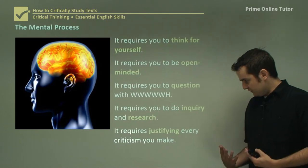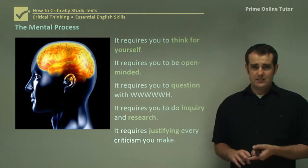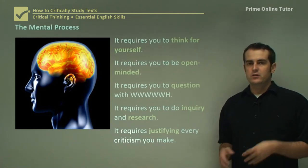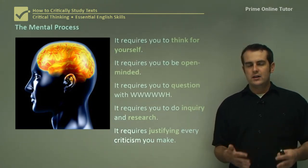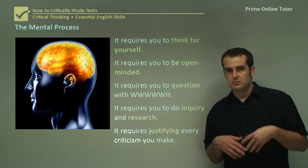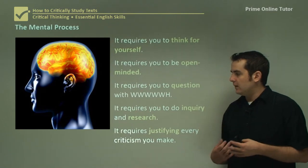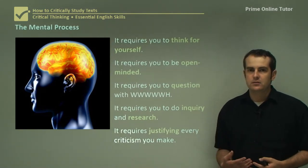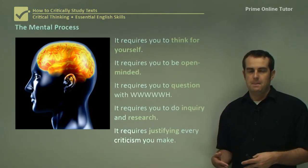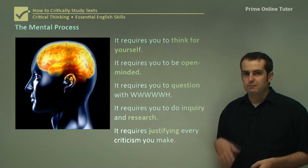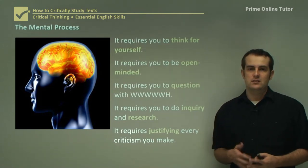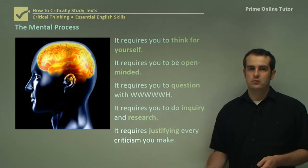Finally, it requires you to justify. This is the most important bit. Every criticism you make — it's great to think for yourself and have your own opinion, but when you're writing about your opinion you can't just use it on its own. You need to actually justify it with some sort of evidence, some sort of reasoning, some sort of idea which can be accepted by another person — beyond the point where someone says 'well, it's just your opinion — prove it.' Justification is the concluding step: being able to find something that proves what you're trying to say.